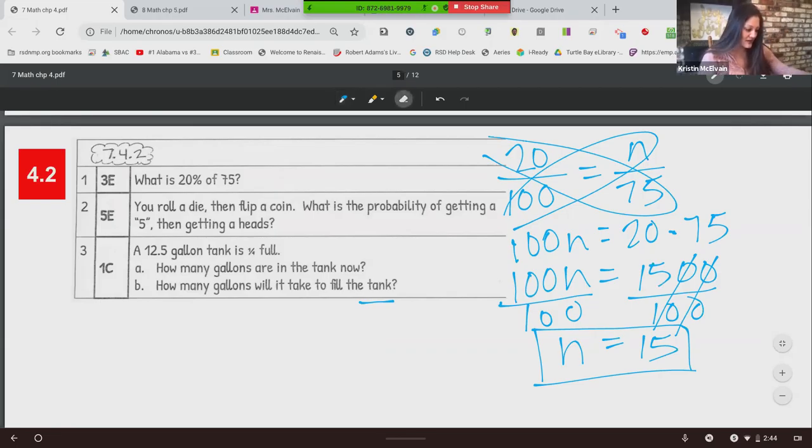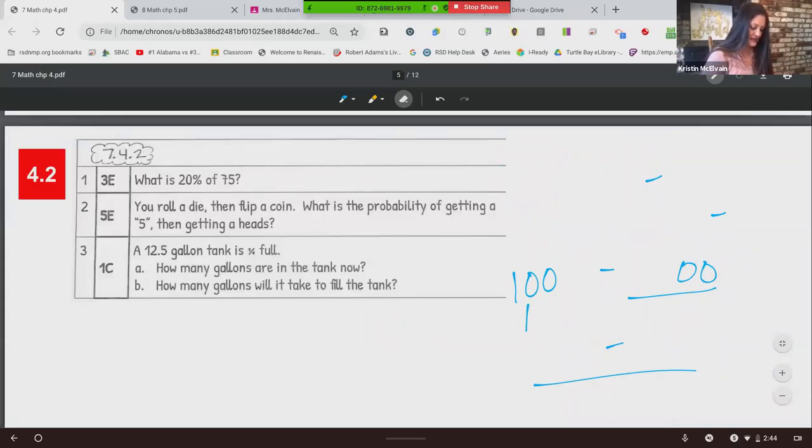This next one, I know you guys are mastering. Number two, done with number one. So number two, we want to do probability. You roll a die, then flip a coin. What is the probability of getting a five and then getting a heads?